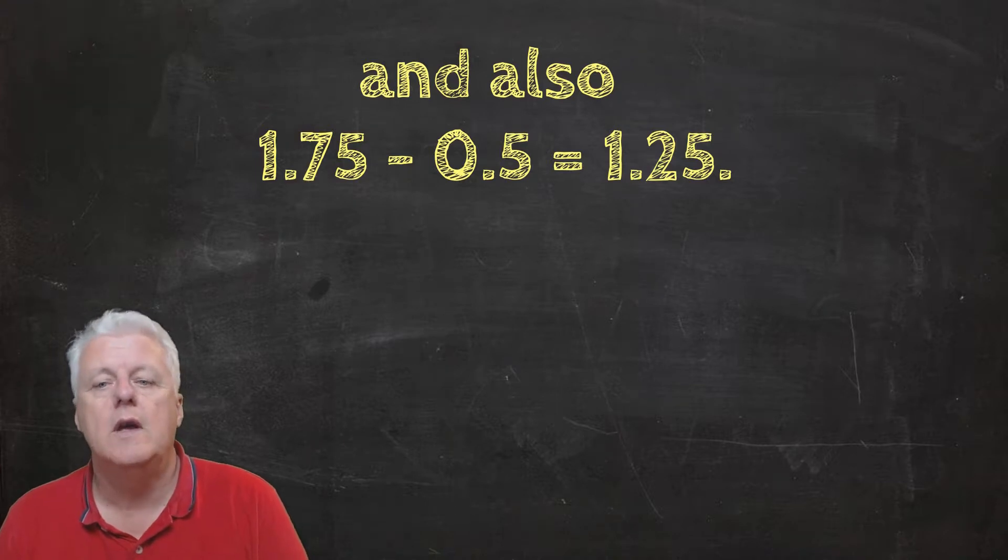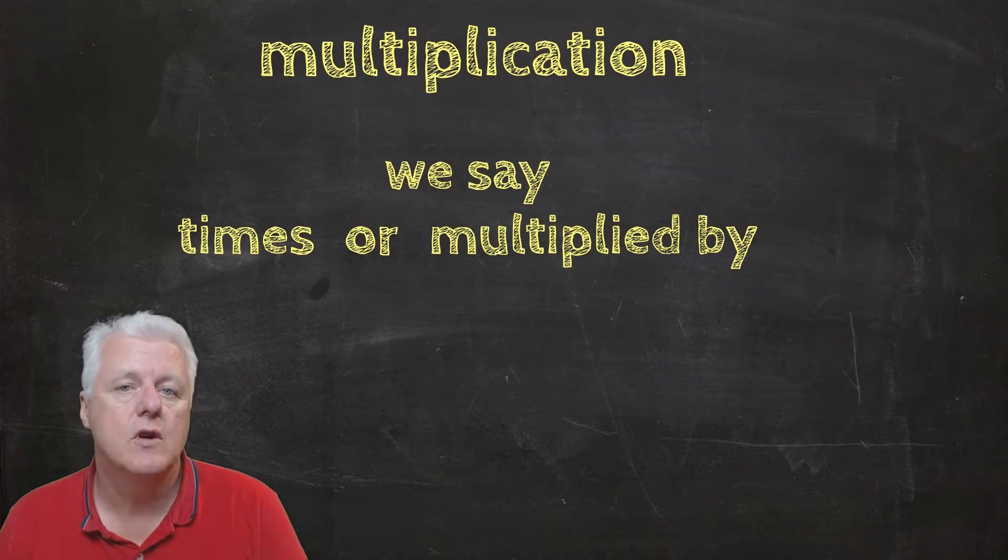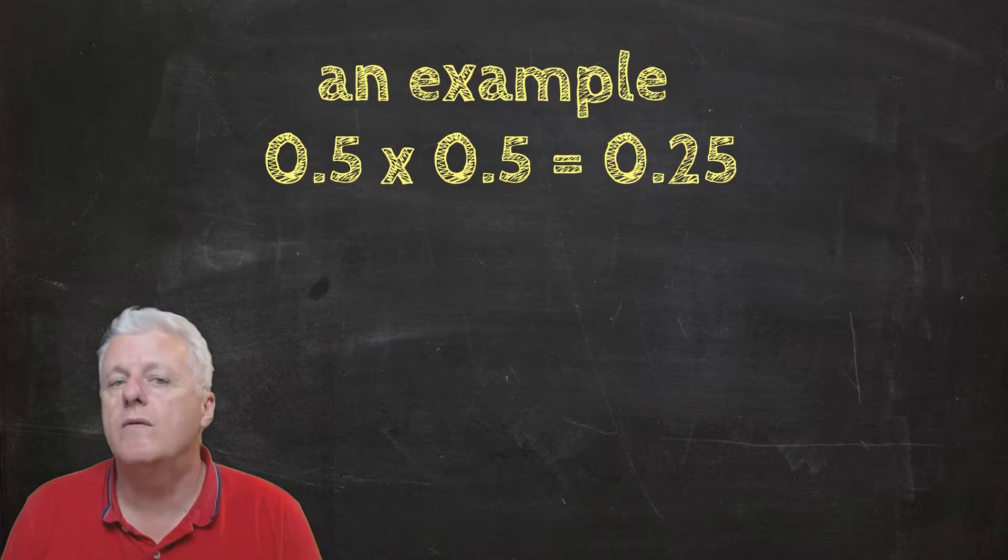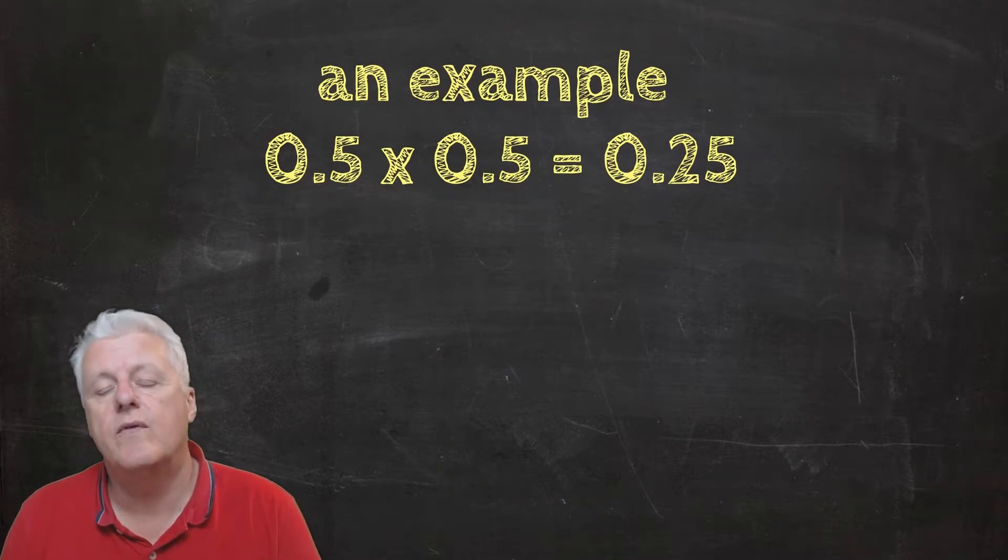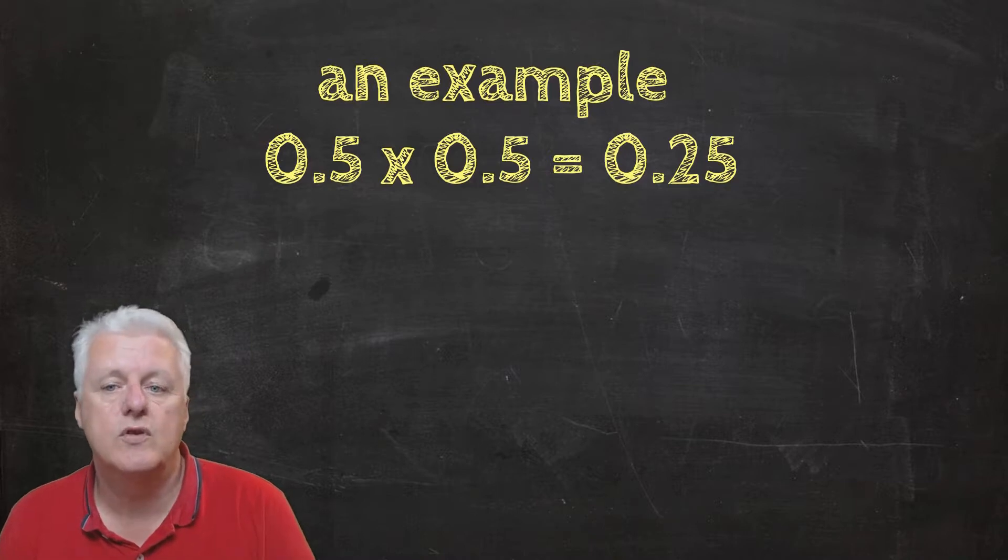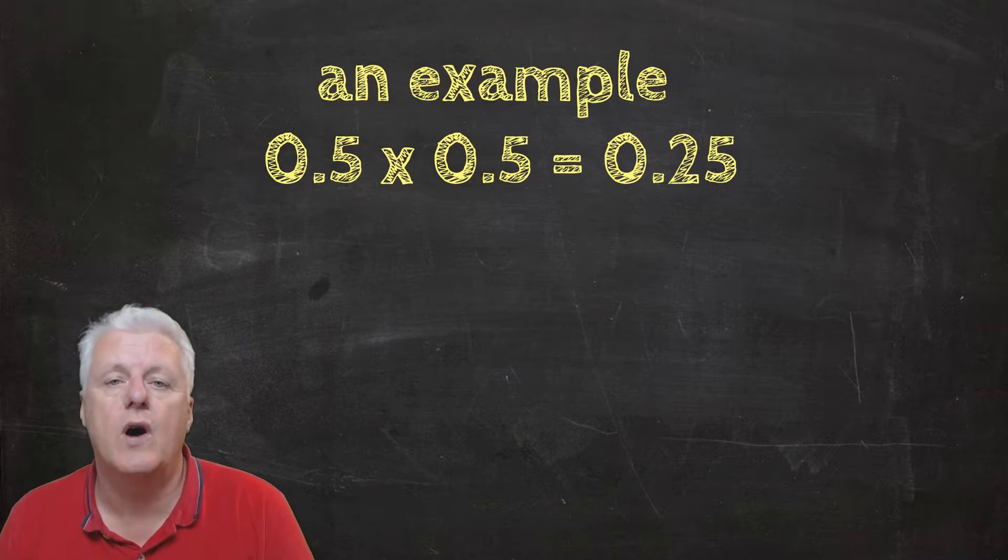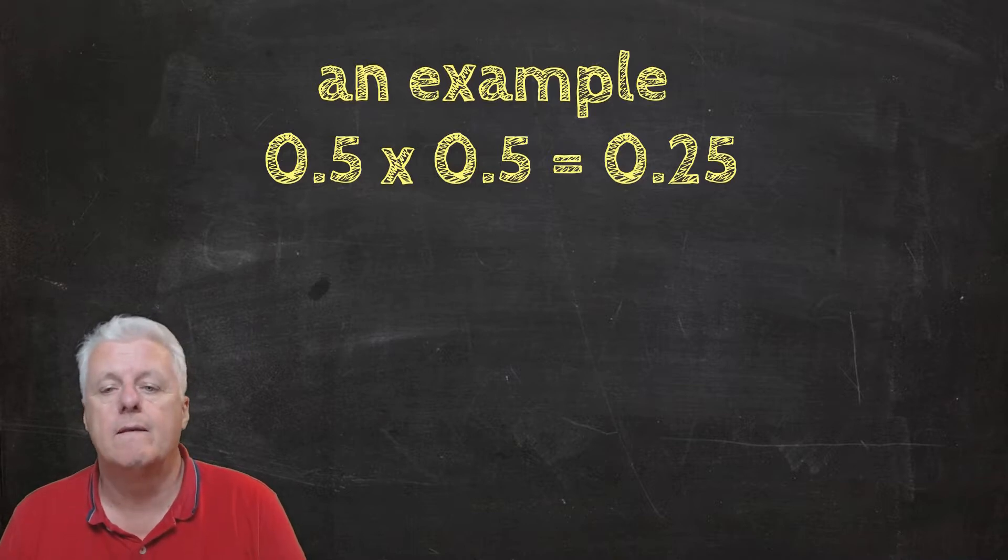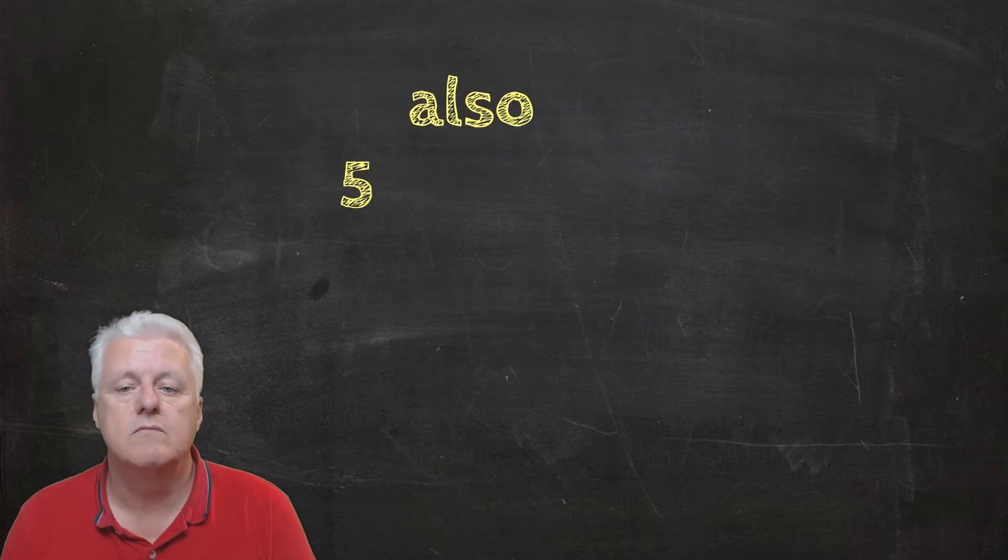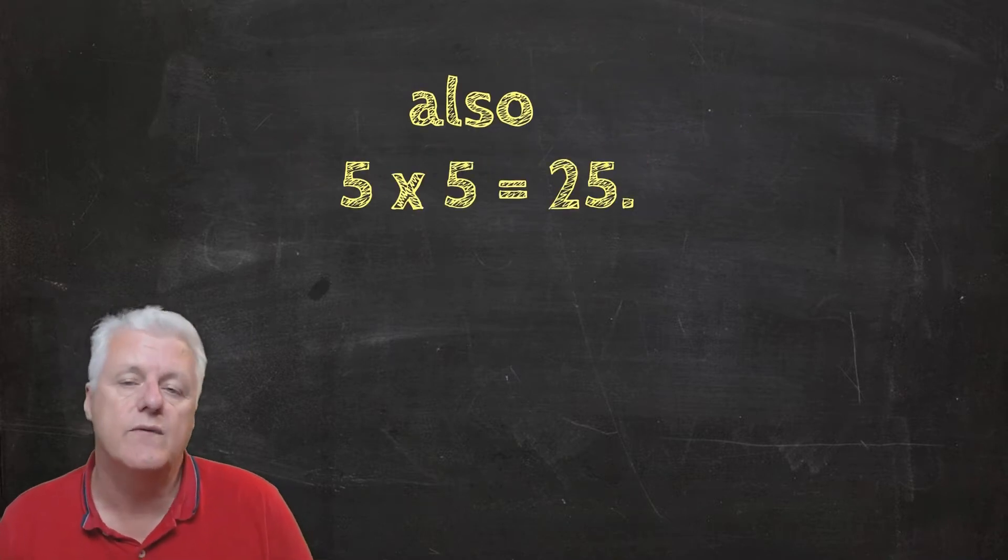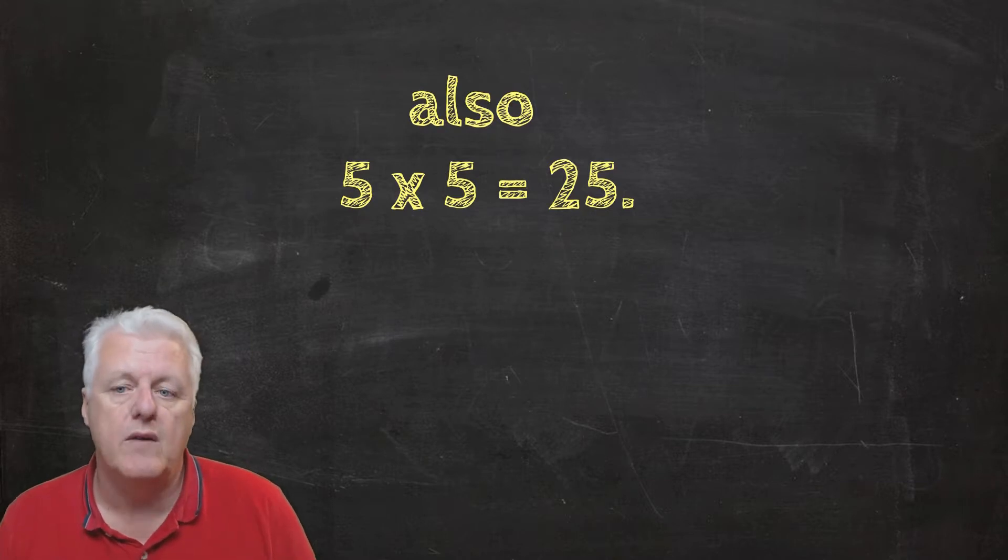In multiplication we say times or multiplied by. An example: 0.5 times 0.5 equals 0.25. We can also say this with whole numbers, so 5 times 5 equals 25, or 5 multiplied by 5 equals 25.